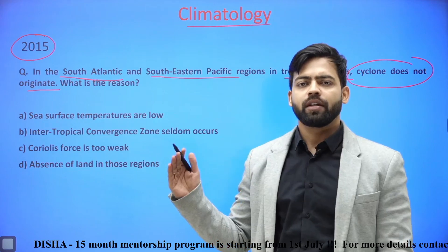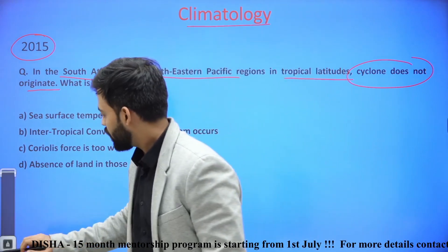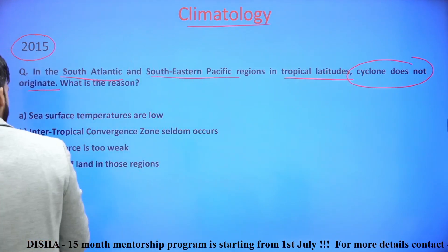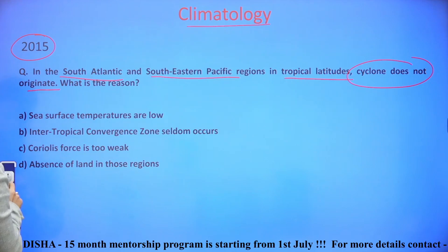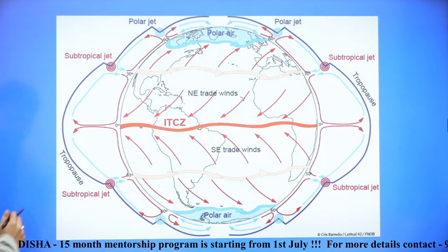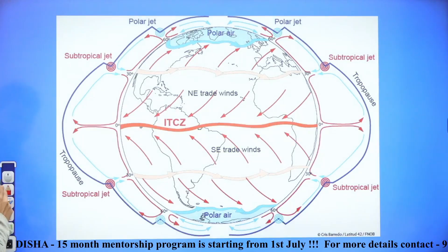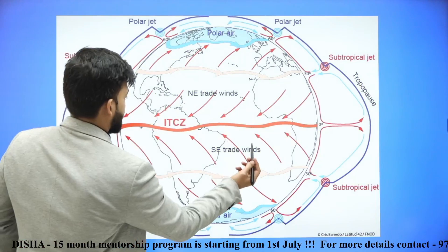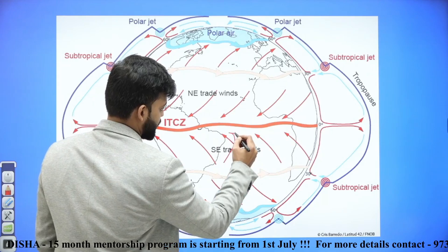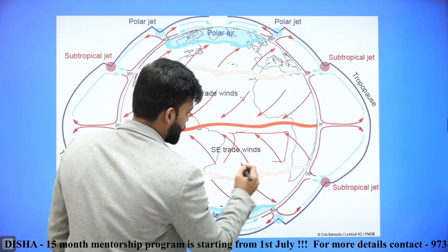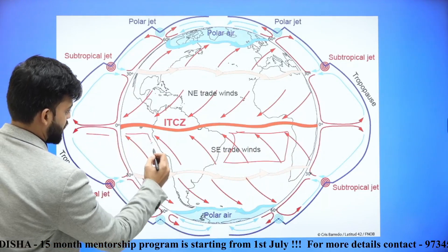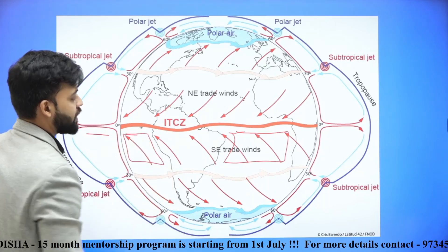To understand this question, let's look into the concepts of ITCZ, sea surface temperature, and Coriolis force as far as the south Atlantic and south eastern Pacific oceans are concerned. This is the south Atlantic ocean in the tropical latitude, and this is the south eastern Pacific ocean in the tropical latitude.